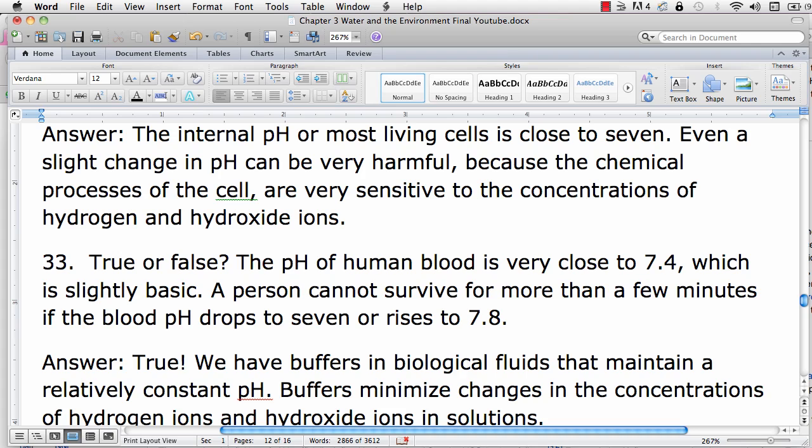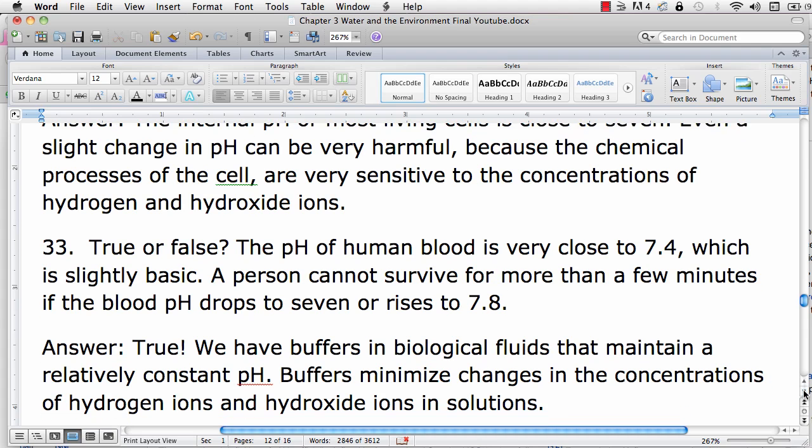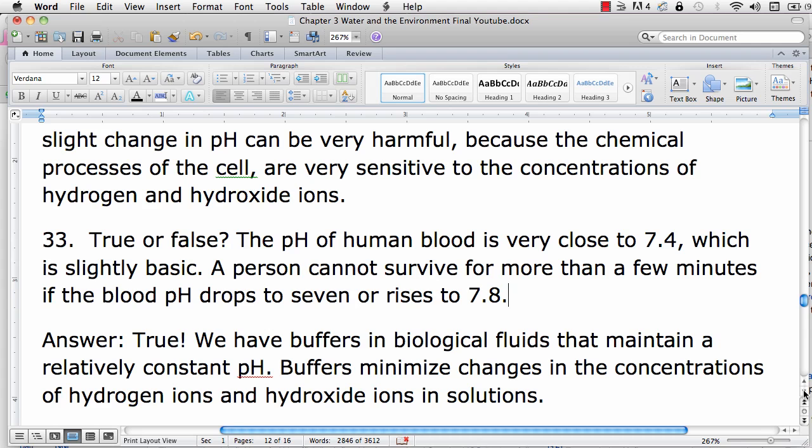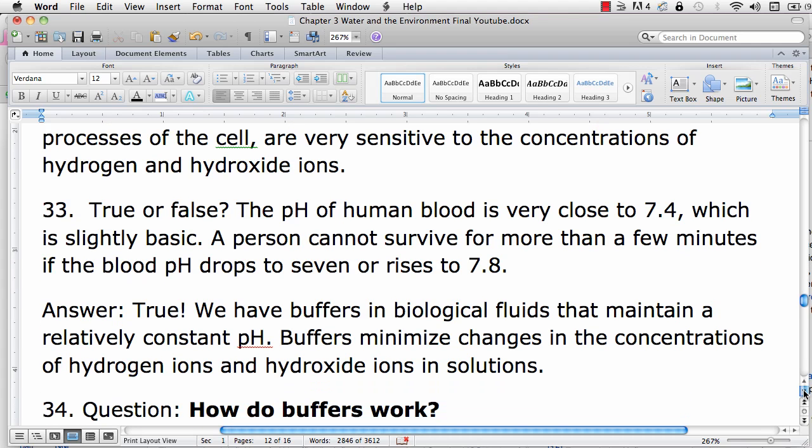For example, the pH of human blood is very close to 7.4. Processes in the cell are very sensitive to hydrogen ion and hydroxide ion concentrations. So even if the pH drops to 7 or goes up to 7.8, a person cannot survive for more than a few minutes.